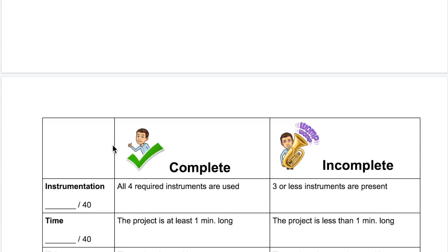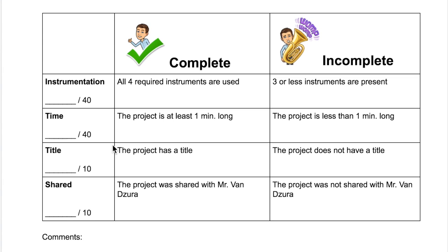With that in mind, this is what your rubric looks like for this project. There are four categories — each of those were the things we just talked about. Number one being the instrumentation, making sure all four of those instruments are in your piece. Number two is time, making sure that it's at least one minute long. Then the title, just naming it something, and that you shared it with Mr. Vanzura.